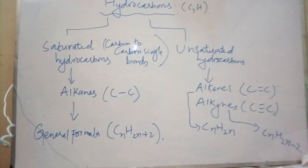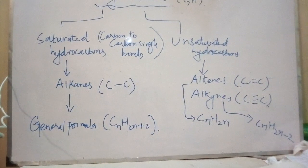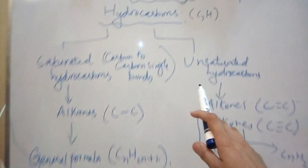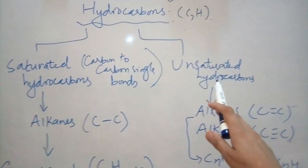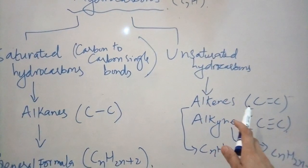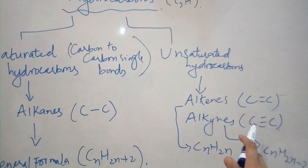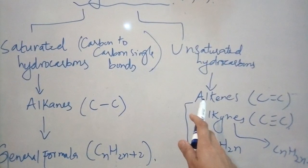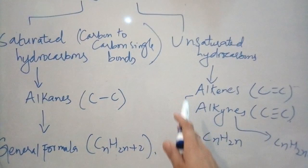Unsaturated hydrocarbons are those hydrocarbons which contain carbon to carbon double bonding and carbon to carbon triple bonding. Examples are alkenes and alkynes.